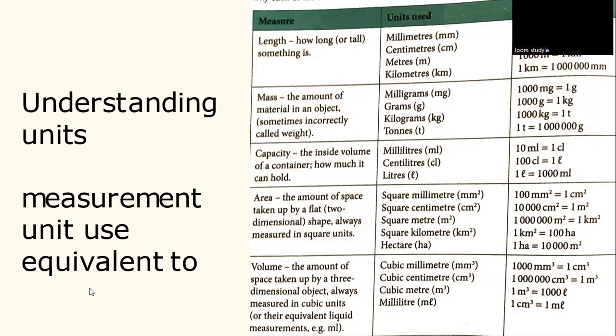1,000 milligrams is equivalent to 1 gram. 1,000 grams is equivalent to 1 kilogram. 1,000 kilograms is equivalent to 1 ton. And 1 ton is equivalent to 1 million grams.